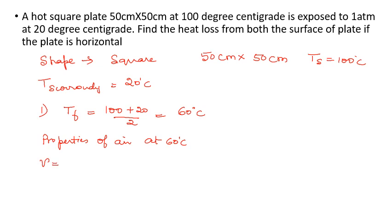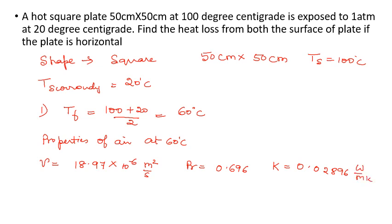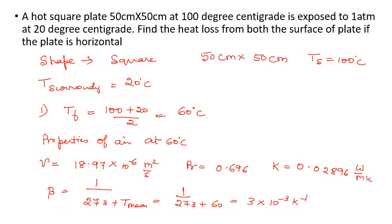The properties of air at 60°C are: ν = 18.97 × 10⁻⁶ m²/s, Prandtl number = 0.696, k = 0.02896 W/m·K. The beta value is not given in the handbook, but we can use β = 1 / (273 + T_mean) = 1 / (273 + 60) = 3 × 10⁻³ K⁻¹.